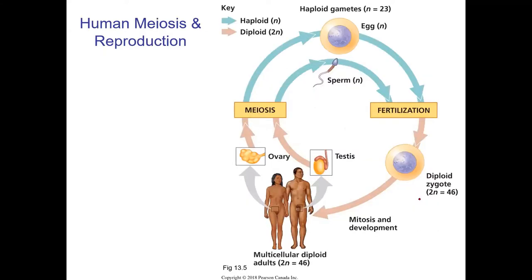Let's talk about human meiosis. A person with ovaries is going to make eggs, which are haploid, and a person with testes is going to make sperm, which are also haploid. The fertilization procedure is where those two things come together and you end up with a diploid zygote, which grows and divides and eventually differentiates to make a full diploid adult.